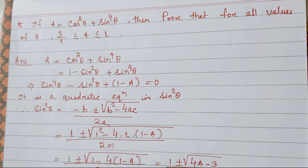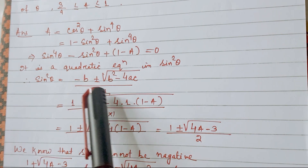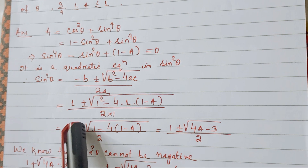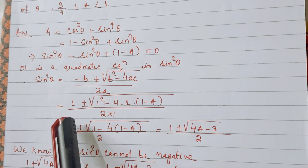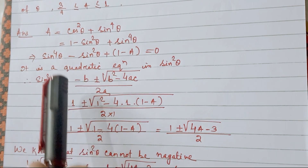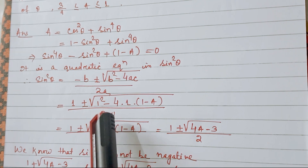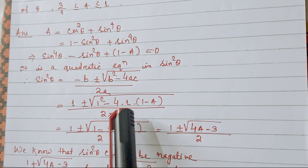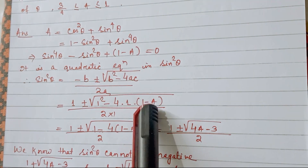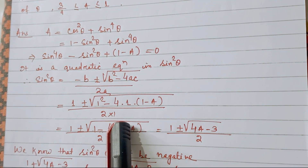The formula for solving the quadratic equation is: sin²θ = (−b ± √(b² − 4ac)) / 2a. In place of −b we write 1, so: sin²θ = (1 ± √(1 − 4·1·(1 − A))) / 2.